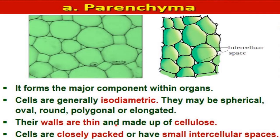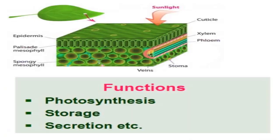These are the characteristic features of parenchyma tissue. The functions of parenchyma tissue are: photosynthesis, because these cells contain chlorophyll; storage of food; and secretion of useful substances for the plant.